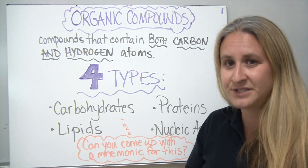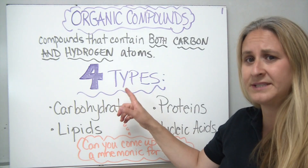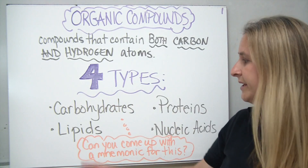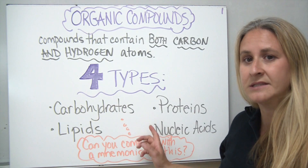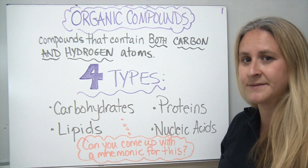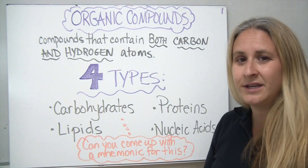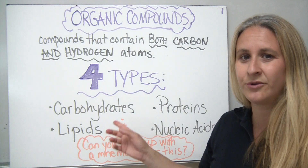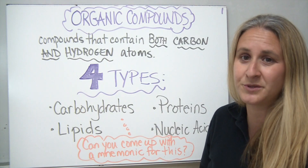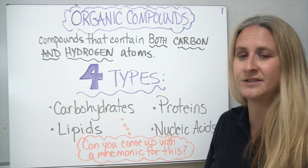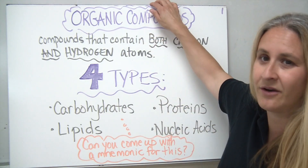So we're going to look at some of the different types of organic compounds that are known. There are four main types that we discuss in living environment. They are the carbohydrates, lipids, proteins, and nucleic acids. One thing that you might think about is trying to come up with some sort of a memory tool in order to remember what the four types of organic compounds are — maybe a mnemonic or a funny sentence in order to help you remember what they are.